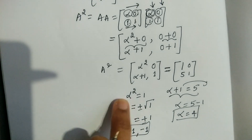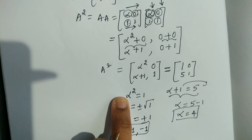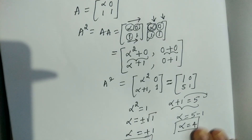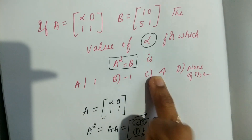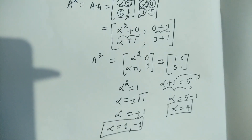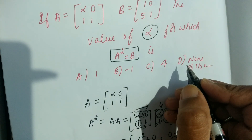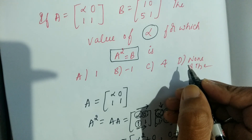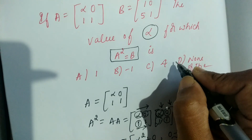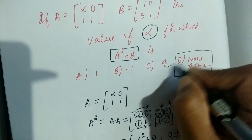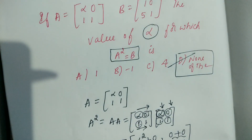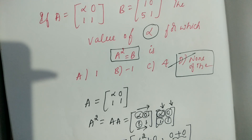So we get three values from the two equations, but they are not consistent with each other — α = 1, α = −1, and α = 4. Since more than one value exists and they don't agree, the answer is none of these — Option D is correct.